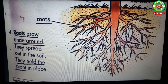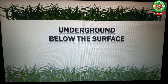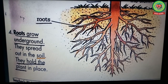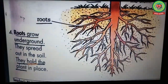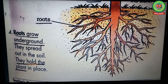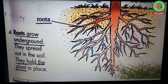Now children, let's start reading about the root part. Roots grow underground. Underline the word 'underground' and write down its meaning: below the surface. Roots spread out in the soil. Underline the word 'soil' and write down its meaning: the upper layer of the earth in which plants grow. Roots give support to the plant and hold the plant in place. Underline 'hold' and write its meaning: fix.